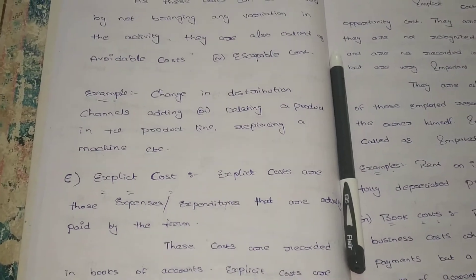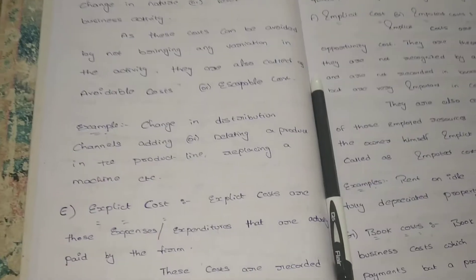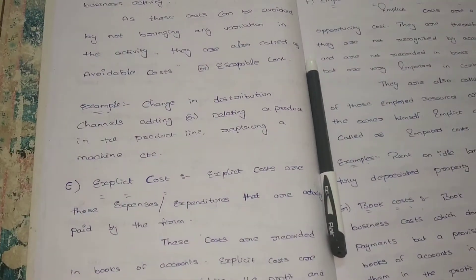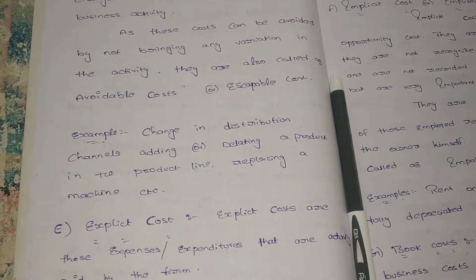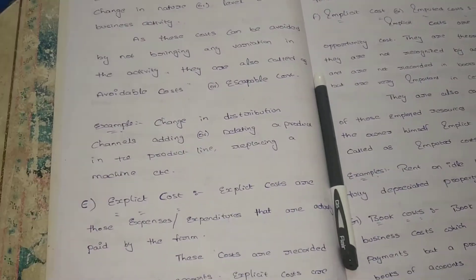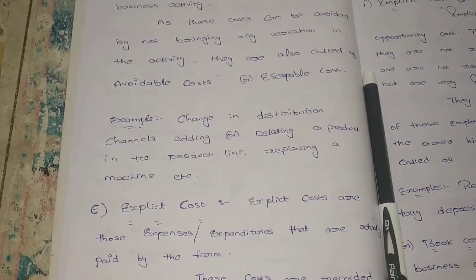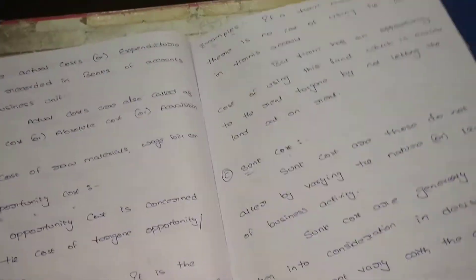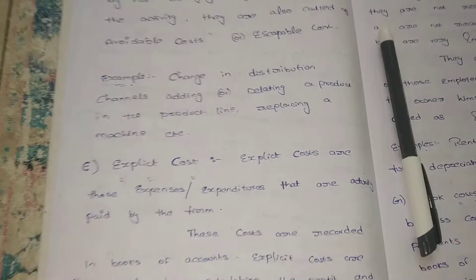Hi, very good evening to all. I hope all are good. My name is Bhavana and our subject is business economics. This is for the BBS students in first year, first semester. We are continuing our lecture, discussing different types of cost in every business organization. We discussed four types of cost: actual cost, opportunity cost, sunk cost, and incremental cost.